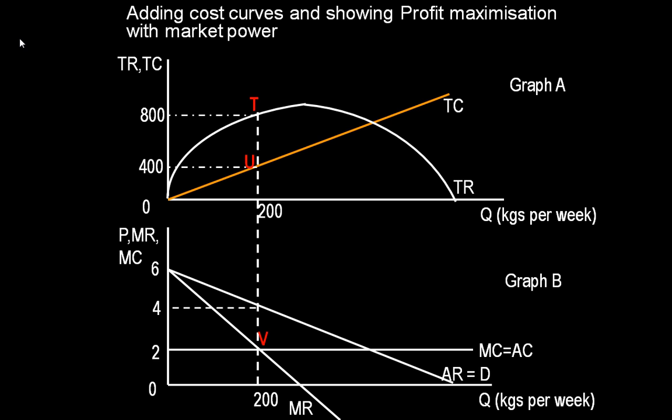We also need to add the total, marginal and average cost curves in order to show profit maximization. In graph A, we show the point where the distance between total revenue and total cost is greatest. This is the distance TU. This is at 200 units. Here we can see that profit is 800 pounds, that's total revenue, minus 400 pounds, total cost, and so it equals 400 pounds. Profit is 400 pounds. Note that tangent C, the slope of the total revenue curve at 200 kilograms, has the same slope as the total cost curve at this point, indicating that marginal revenue equals marginal cost at 200 kilograms. This point is shown in the lower diagram at V.